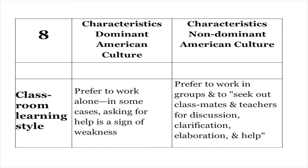The classroom learning styles also differ. In the dominant white middle class culture, students prefer to work alone and asking for help is seen as a sign of weakness — raising your hand and asking questions signals you don't know what's going on. However, that's a strength in the non-dominant culture. They prefer to work in groups, seek out classmates, and ask for help, because they're socially oriented.